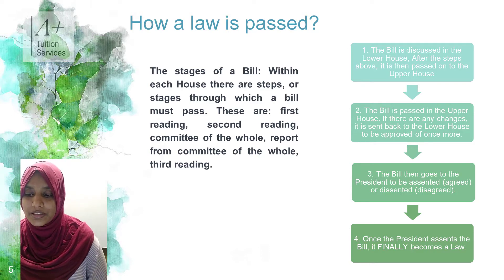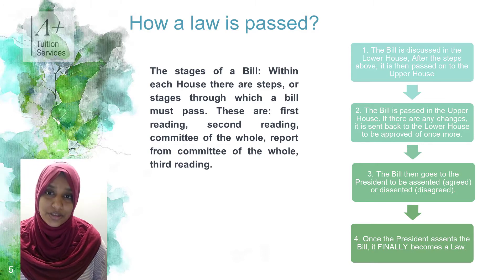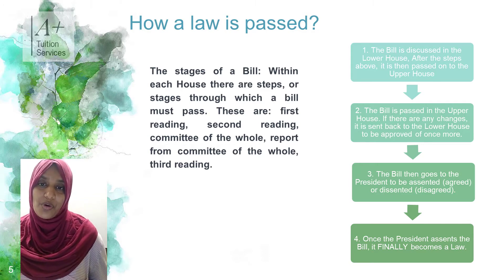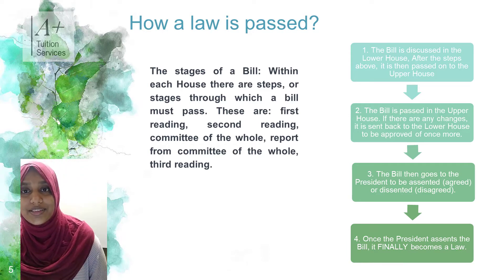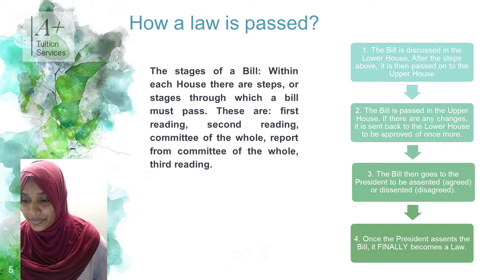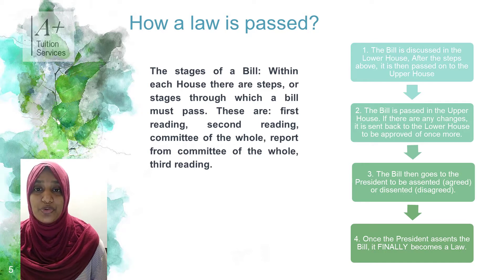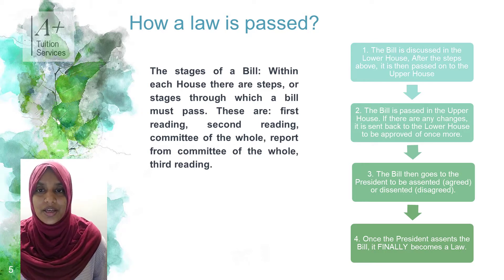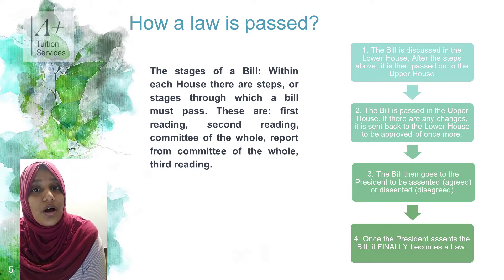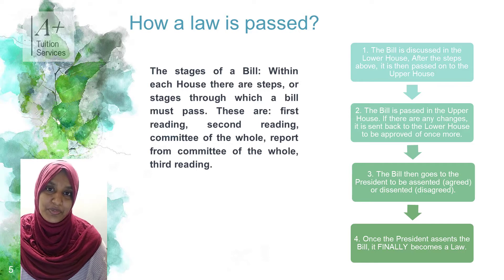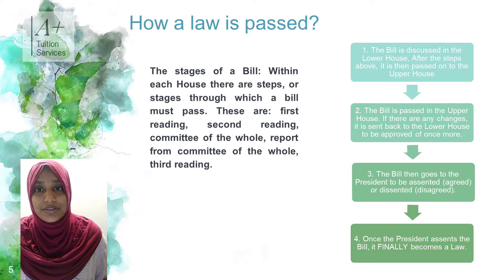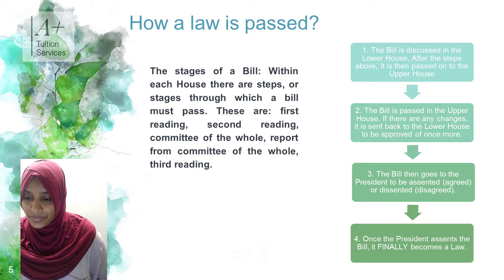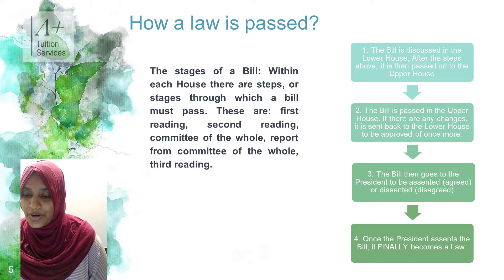After the bill is discussed in the lower house it is passed on to the upper house. If there are any changes in the upper house, it is sent back to the lower house for them to make amendments and then it needs to be approved once more. This is what takes time - the bill is scrutinized in the lower house, and when it reaches the upper house a different set of people scrutinize it, and then it may move back down. That is why some laws take years to pass. The third step is the bill goes to the president to be assented or agreed upon, or dissented or disagreed with.